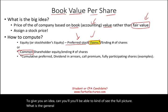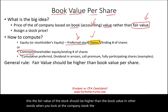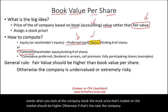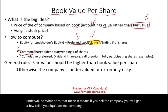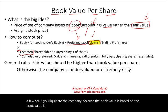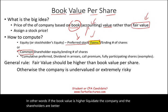The general rule from a business perspective is that the fair value of the stock should be higher than the book value. The stock price traded on the market should be higher. Otherwise, the company is undervalued — meaning if you liquidate the company, because the book value is based on accounting and balance sheet figures, the shareholders would be better off liquidating.